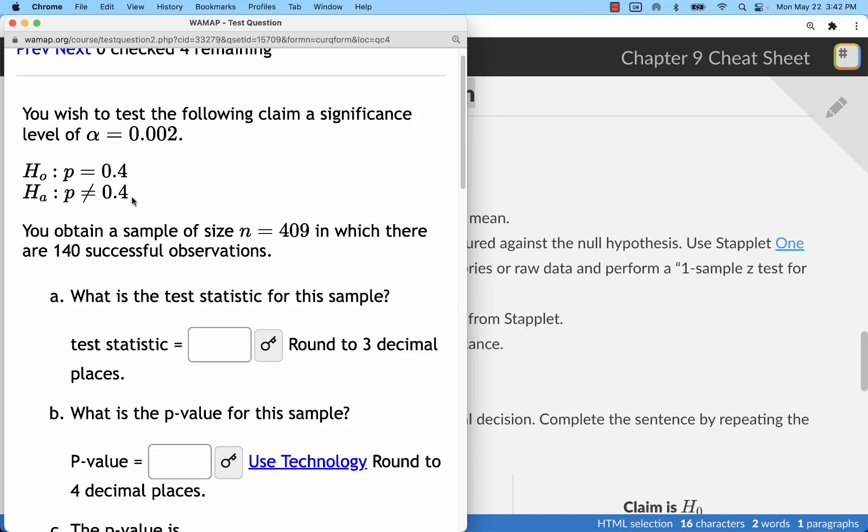In this problem, it doesn't initially say whether the claim is the alternative or null hypothesis, and it actually could be either of those.